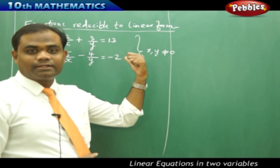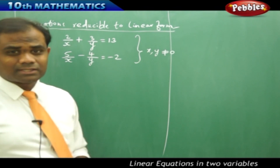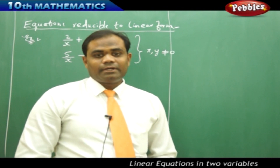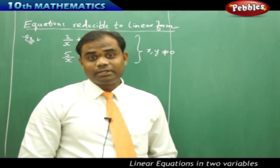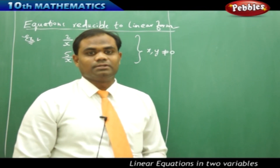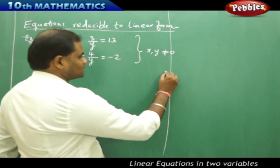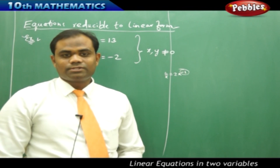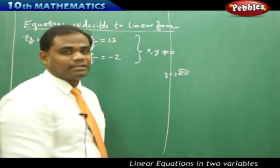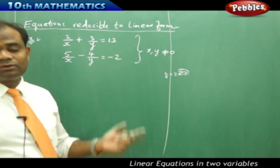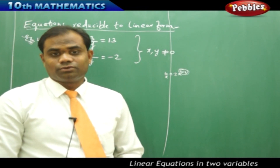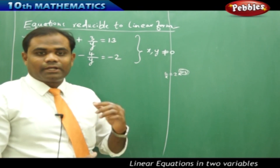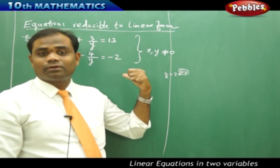Why are these equations non-linear? Recalling the definition: linear equations are polynomials with non-negative integral powers. Writing 2 over x as 2x to the power of negative 1 shows a negative integral power, which violates the rule. Therefore these are non-linear equations in two variables. We will convert them into linear form and solve, then substitute back to get the solution of the original non-linear equations.